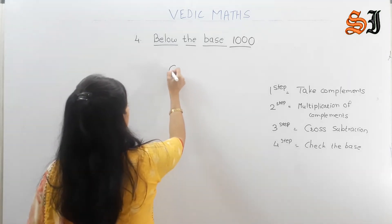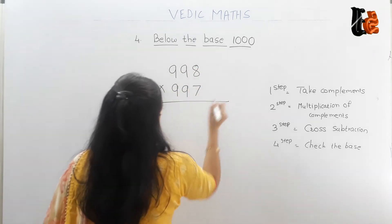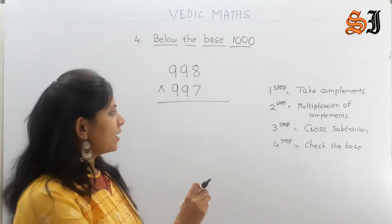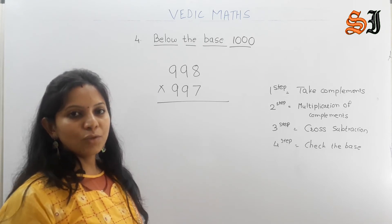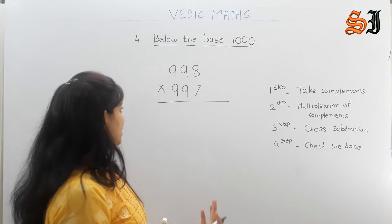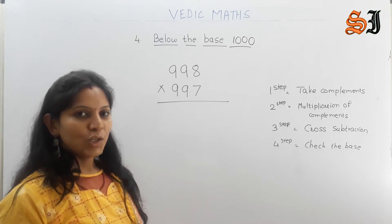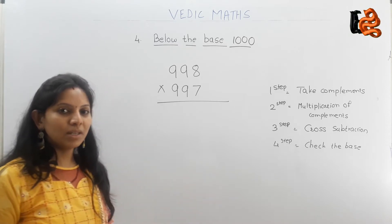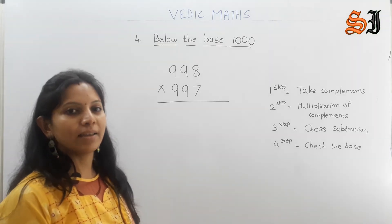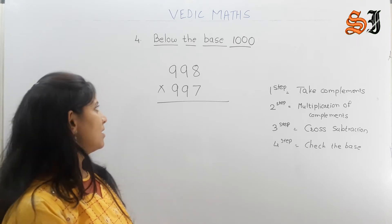We are going to multiply 1000-near base numbers: 998 into 997. Now pause the video and try to solve it. See how much time you need — at least 1 minute, because it is 3 steps: you multiply 7, then 9, then add 9. It is obviously time-consuming. But with this method, you can do it in 42 to 50 seconds — or even 2 to 3 seconds. So it will be easy.